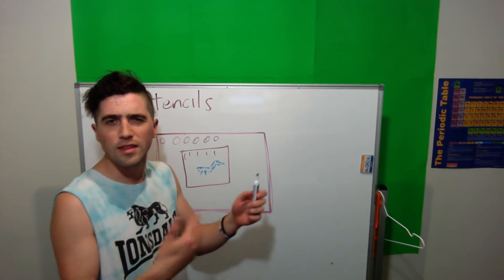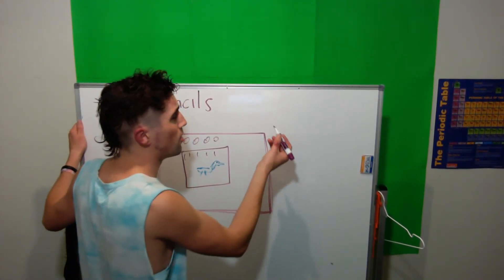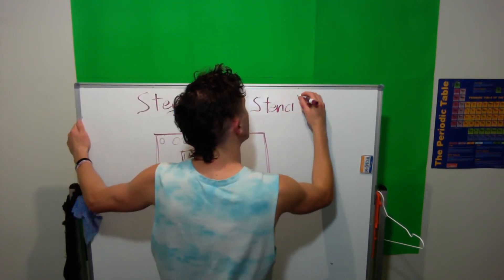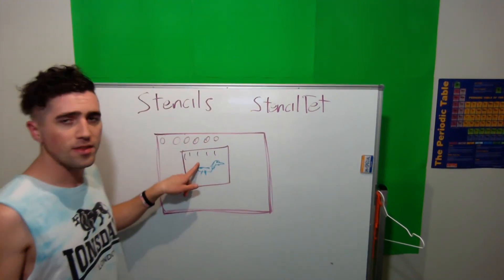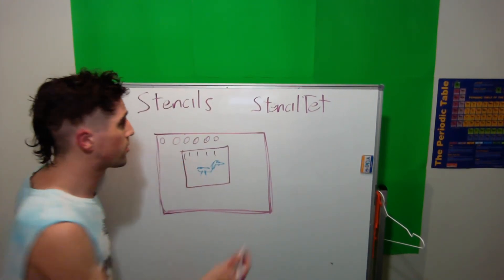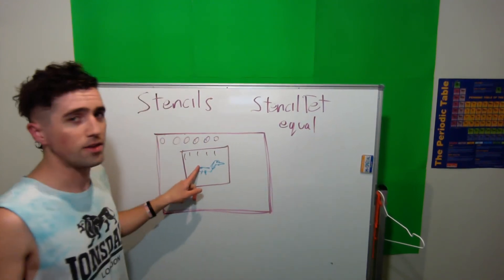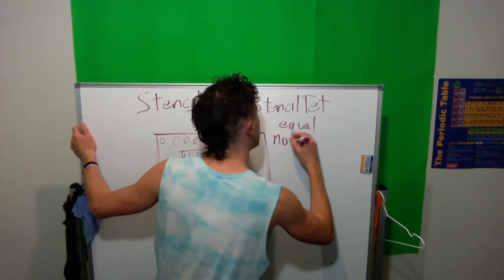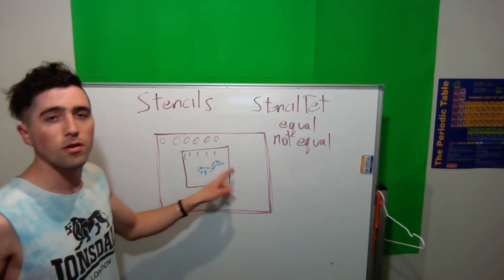In a z-buffer, it'd be called a z-test. But in a stencil, we're going to call it a stencil test. And that can be something like, if the stencil buffer is equal to 1, is it equal? Then we will draw the duck. If it's not equal to 1, if it's not equal, then we will not draw the duck.